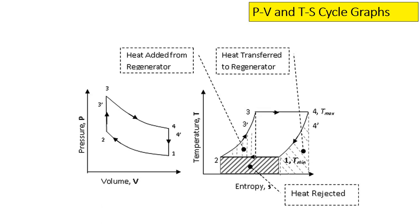These two representations of the Stirling engine are shown in the PV plane and the TS plane — that is, pressure versus volume, and temperature versus entropy.